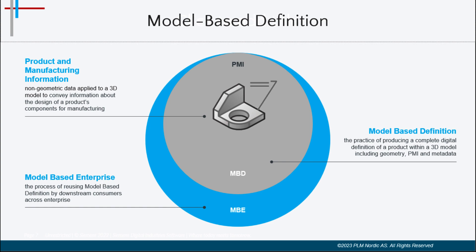PMI is the product and manufacturing information, such as notes, GD&T, etc., which is applied to the 3D geometry. One of the benefits of PMI is that when added to a 3D model, it can be used by downstream applications for manufacturing, assembly planning, variational analysis, inspection, and collaboration. PMI created with NX complies with industry standards for 3D digital product definition, and 3D models with PMI can be used as a replacement for drawings.